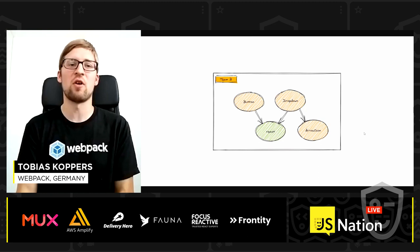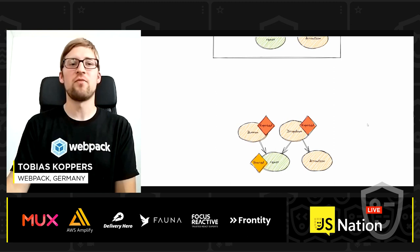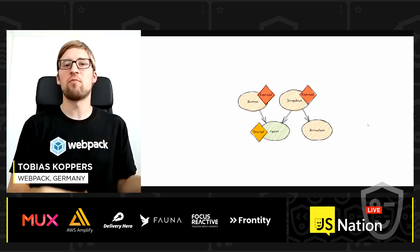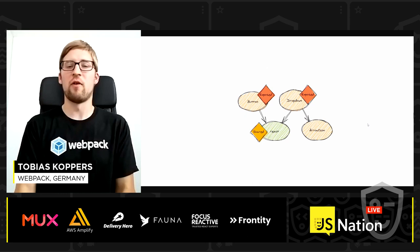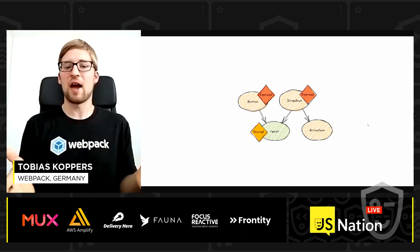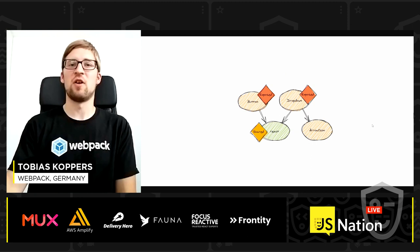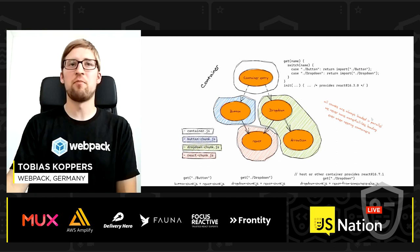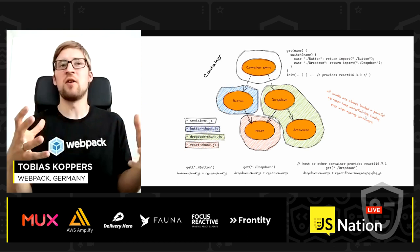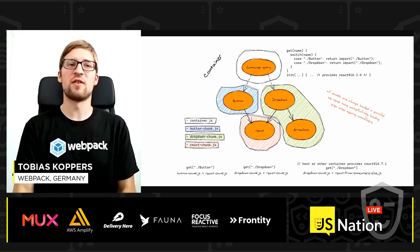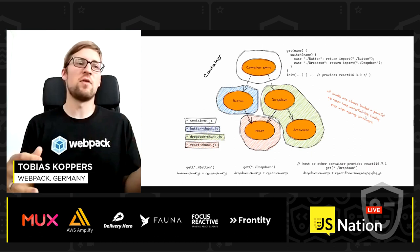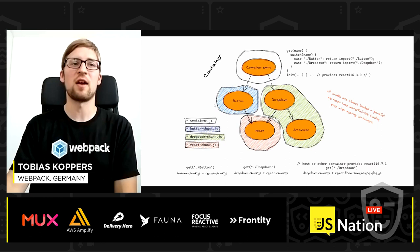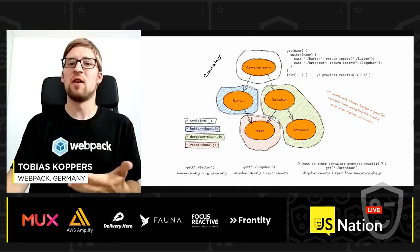To use Module Federation, Team B flags their modules in the graph: button and dropdown are marked as exposed — meaning available via the container interface — and React is flagged as a shared library to potentially be shared with other teams at runtime. Webpack then builds a container. A container entry module is generated referencing all exposed modules. Every exposed module is placed in a separate file, with dependencies bundled together.